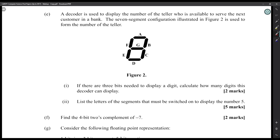A decoder is used to display the number of a teller who's available to serve the next customer at a bank. The seven-segment configuration illustrated in Figure 2 is used to form the number of the teller. If there are three bits needed to display a digit, calculate how many digits this display can show. If these are three bits, your values will go from 000 to 111, so that will be seven. It's actually eight digits - zero to seven is eight digits, but seven is the highest value.